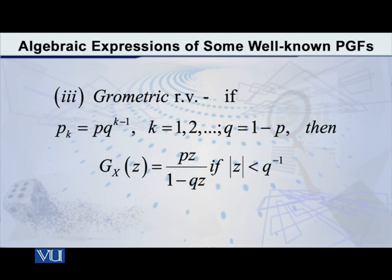In this way, the geometric distribution, the expression is PZ divided by 1 minus QZ. When we derive it, this is what we obtain. And there is also a condition that the modulus of Z has to be less than 1 over Q.